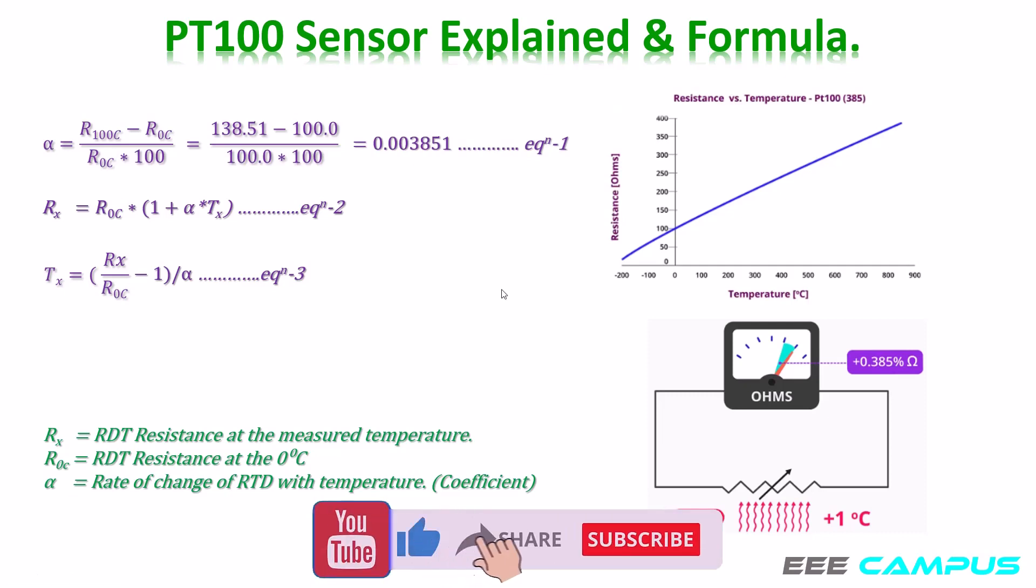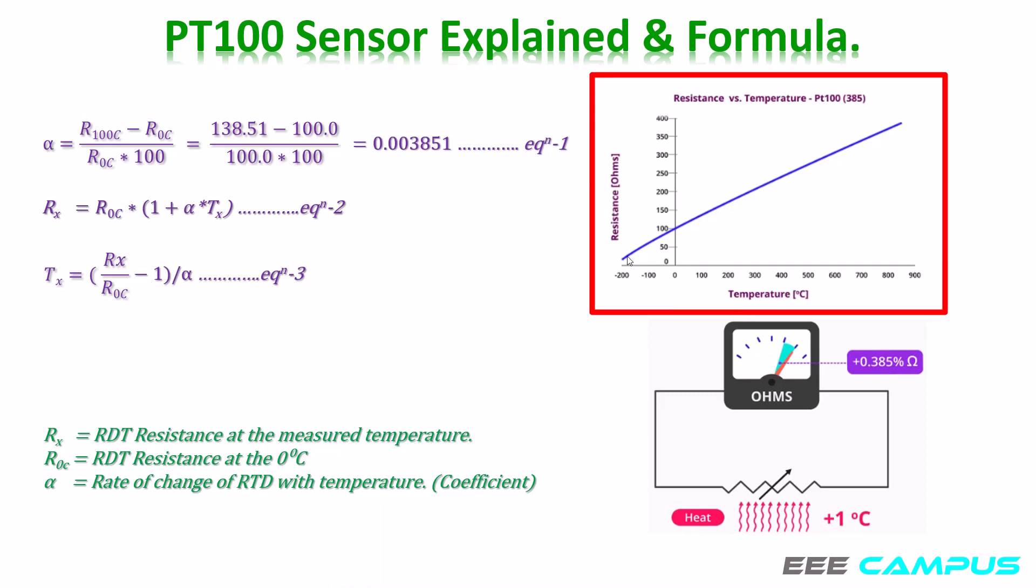Logically, a question may arise in your mind now: why we say it's quite linear rather than linear. Friends, if you look at the image, you will see this blue line is the resistance temperature curve of PT100 sensor. The changes in the resistance of the sensor as the temperature changes are shown by this line. This blue line is not 100% linear. As you can see, when the temperature is 0 to positive, the blue line is almost straight. But when the temperature goes to negative from 0 degrees, the blue line is curved. That's why we call it quite linear.